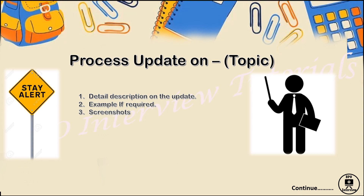Now moving to the next slide — the format of the flyer. This is just my understanding of how you can create a flyer; it's up to you how interactive you want to prepare it. It should look such that when anyone opens the email, they find it important and want to read it. You can use icons like 'Stay Alert', set the title as 'Process Update on [your topic name]', give a detailed description, and if there are any examples or screenshots you want to share, you can add them to the flyer to make it more specific and understandable for the associate.